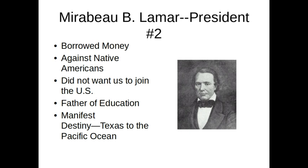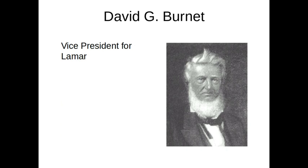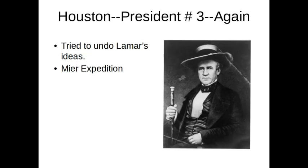He helped start the University of Texas and Texas A&M. His vice president was David G. Burnett. After Mirabeau Lamar was president, we have our third president — Sam Houston again. He tried to undo Lamar's ideas. You remember he thought the opposite things from him, so when he was president again, he tried to undo everything that Lamar had done and try to get Texas adopted by the United States again. Something also kind of big happened during his third presidency — that's the Mier Expedition. I'm actually going to send you some things about that tomorrow because it's sort of a long story.